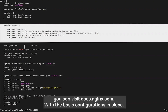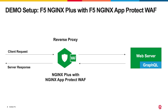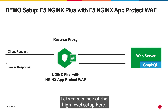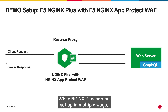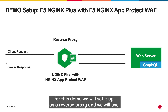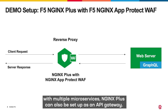With basic configurations in place, let's run an NGINX AppProtect WAF demo set up with GraphQL. Let's take a look at the high level setup here. While NGINX can be set up in multiple ways, for this demo we will set it up as a reverse proxy and we will use GraphQL as a query language for the APIs. For a more complex architecture with multiple microservices, NGINX can also be set up as an API gateway.